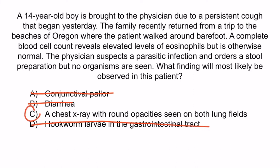So again, the correct answer is C: a chest x-ray with round opacity seen on both lung fields. And with that, we've covered everything you need to know about hookworms.